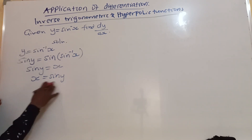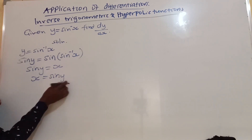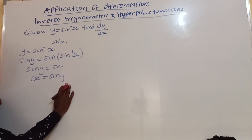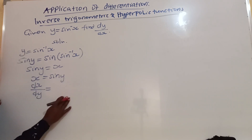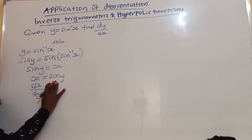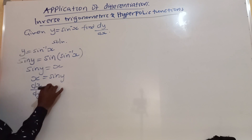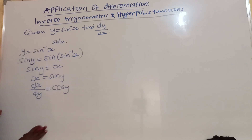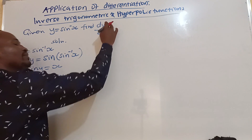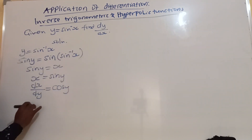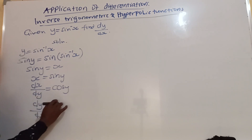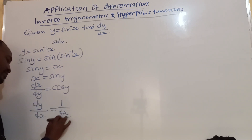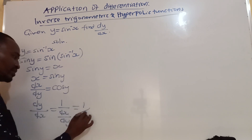That's much easier to start differentiating from this point. We now find the derivative. Since x is a function of y, we find the derivative of x with respect to y. If we differentiate the sine function, we get cosine y. But we are supposed to get the derivative of y with respect to x, not x with respect to y. To get dy/dx from dx/dy, we just take the reciprocal: 1 over dx/dy, which is simply 1 over cosine y.